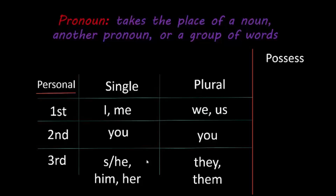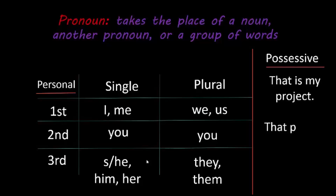The next type of pronoun is a possessive pronoun. It does exactly what it says — it shows possession. Two example sentences: 'That is my project' and 'That project is his.' In the first sentence, my is the possessive pronoun — you're saying whose project it is. In the second one, the project is his — whose project is it? It is his.